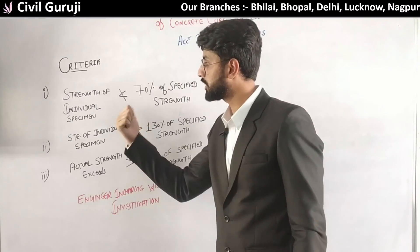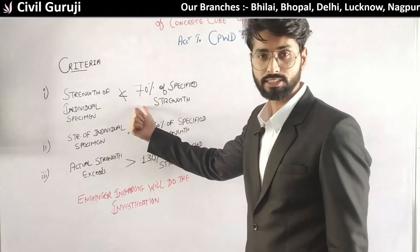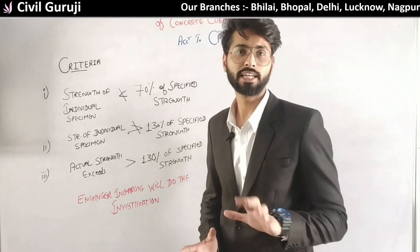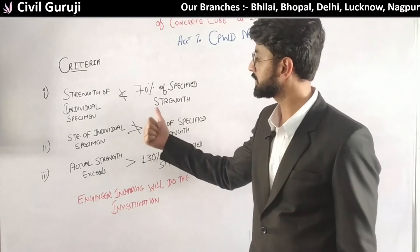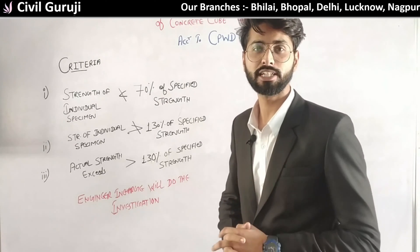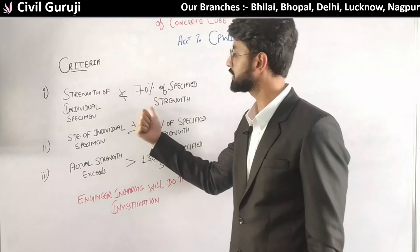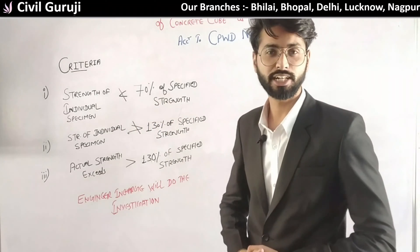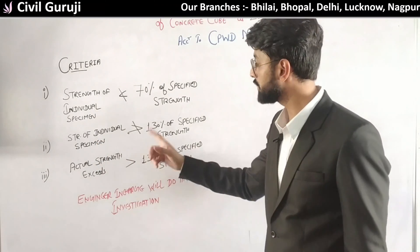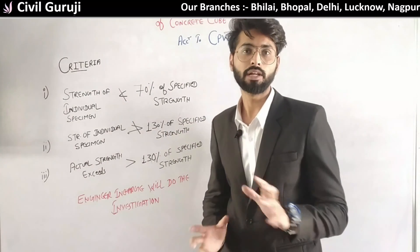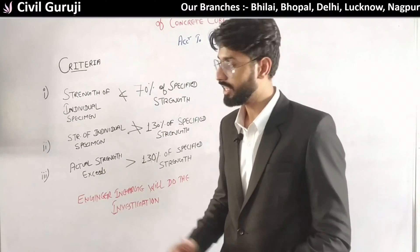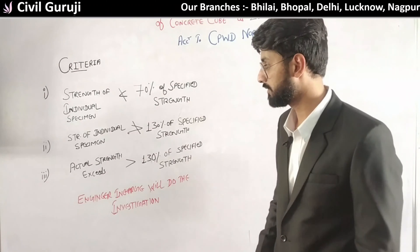Our first criteria is that the strength of an individual specimen cannot be less than 70% of the specified strength. This means the individual strength at 28 days must not fall below 70% of the specified strength.